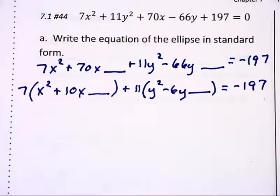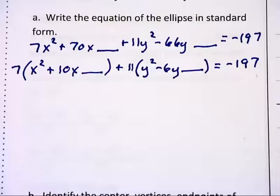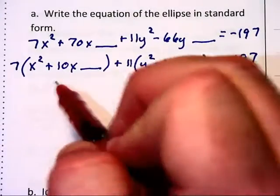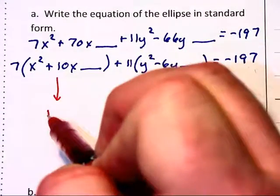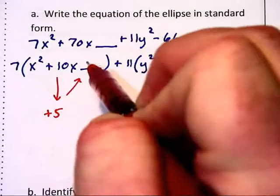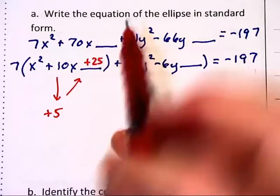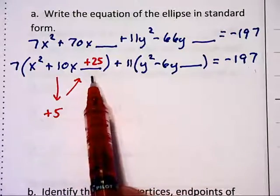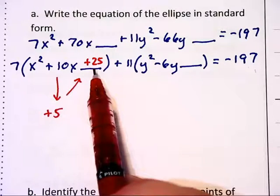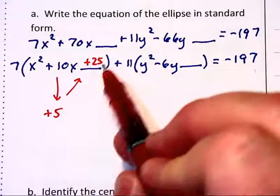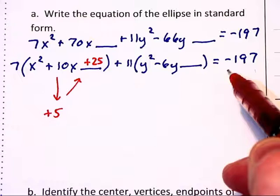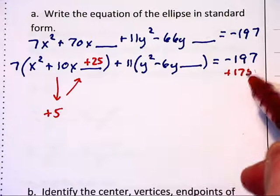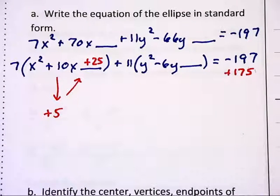And then the complete the square process really begins with the cut in half and square part. Where we take our 10, cut it in half to a 5, square it to a 25. But that really isn't a 25 we added to the left. It's really 7 times the 25. That's really a 175 we added to the left. So we need to add 175 to the right to balance out that equation.